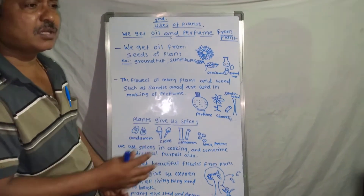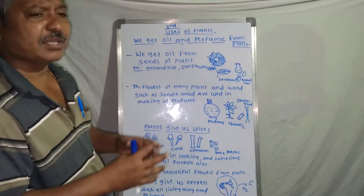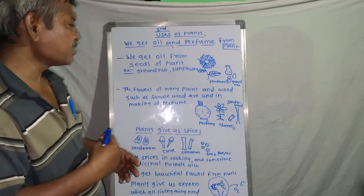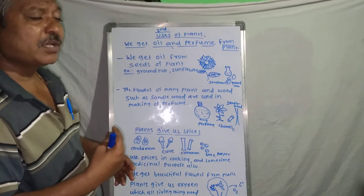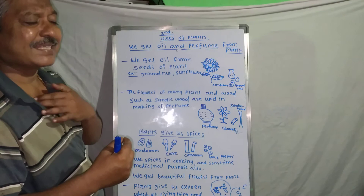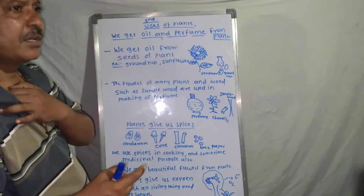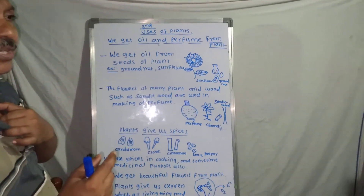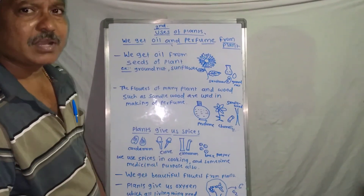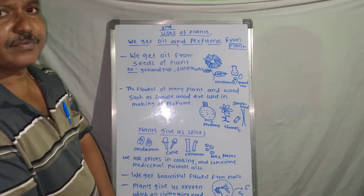In this way, plants are very important for us. They give each and everything to human beings — from clothing to food, from beverages to perfume, and particularly the life-saving gas that is oxygen. This is the most important thing to survive on Earth, and it is provided by plants. So in this way, plants are useful to us in day-to-day life. Thank you.